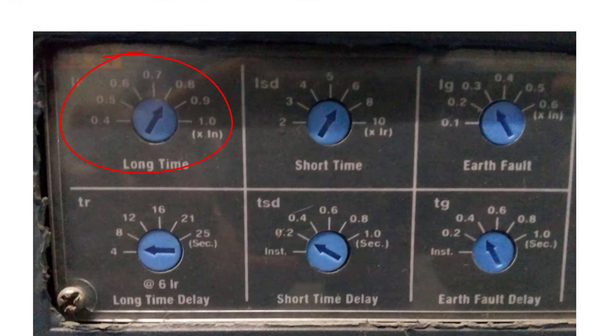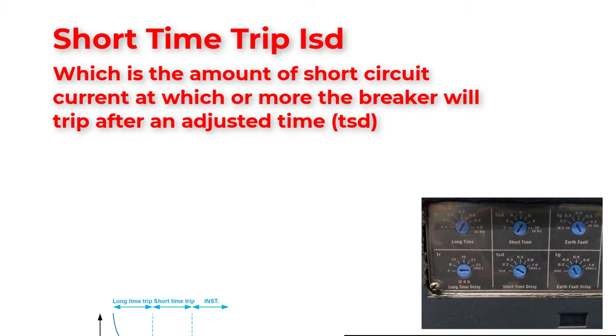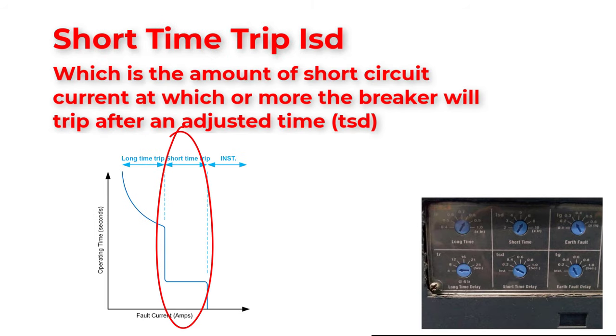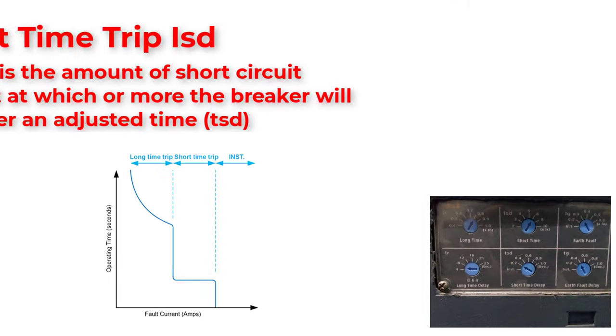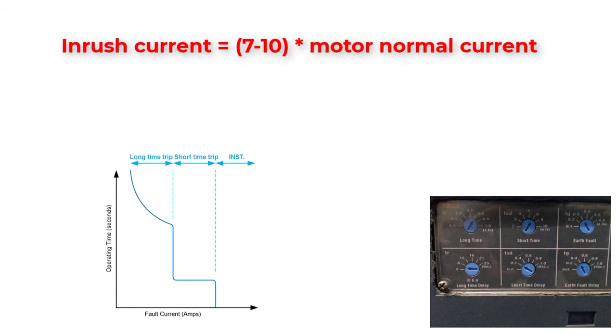Short time trip current is the short circuit current at which or more the circuit breaker will trip after an adjusted time Tsd. For example, the short time current will equal to a value from 1.5 to 10 times Ir or the long time trip current. This value 1.5 to 10 could be adjusted from the trip unit. And the time could be adjusted also. But take into consideration the time of inrush current of induction motor in case the load is an induction motor. Because in inrush current cases, the current of starting will be 7 to 10 times the normal current.